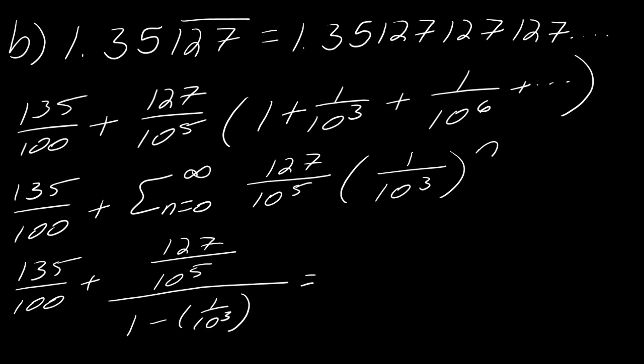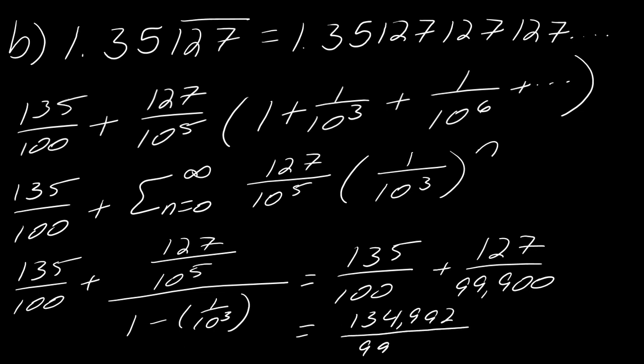So I can do some calculations here to get that this is going to come out to 127 over 999,900. And then if I go through and get a common denominator and do all that good stuff, this will eventually come out to 134,999 over 99,900.